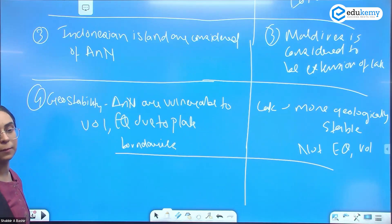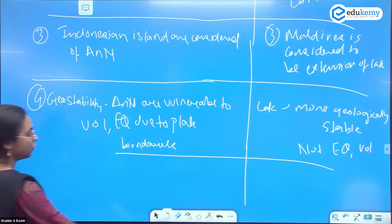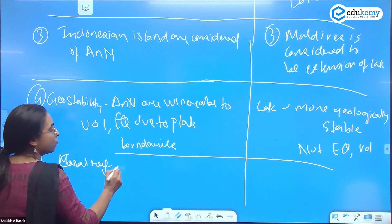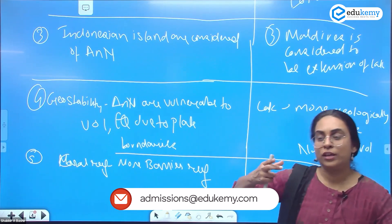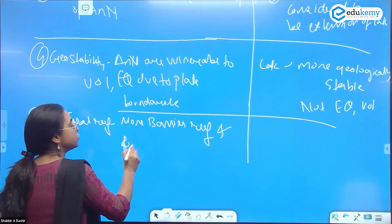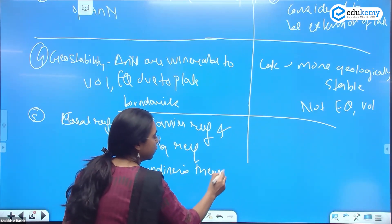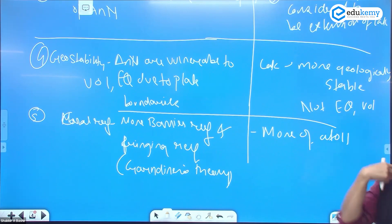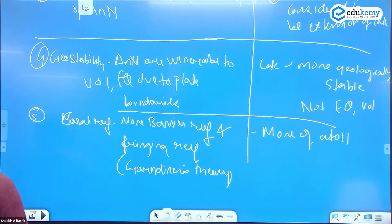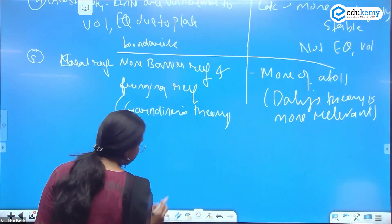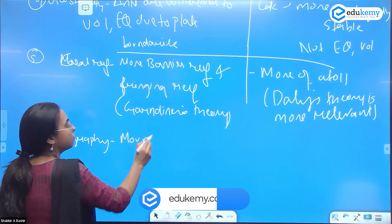In terms of coral reef formation, Andaman-Nicobar has more barrier reefs and fringing reefs — Gardner's theory is applicable here. Lakshadweep has more atolls. Daly's theory is more relevant to Lakshadweep. A question on atolls was asked in Geography Paper 2. This is an important point of contrast between the two island groups.